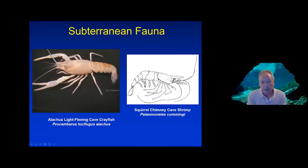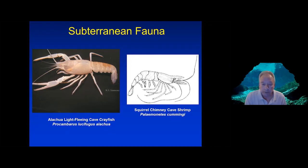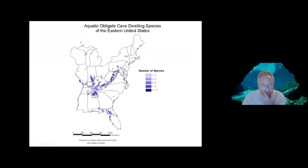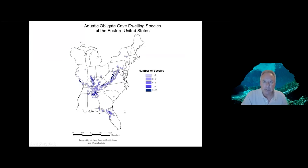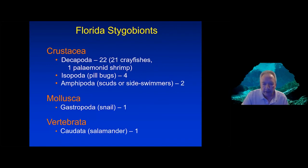Now I want to turn away from macroinvertebrates and talk specifically about our subterranean fauna, which is dominated by and really limited to aquatic species — a truly unique component of Florida karst. Looking at aquatic obligate cave-dwelling species in the eastern United States, there are two areas of geographic concentration: the interior highlands and the Appalachians in Tennessee, Kentucky, and Virginia, and down in the coastal plain in Florida, where we have this aggregation of obligate cave-dwelling organisms.